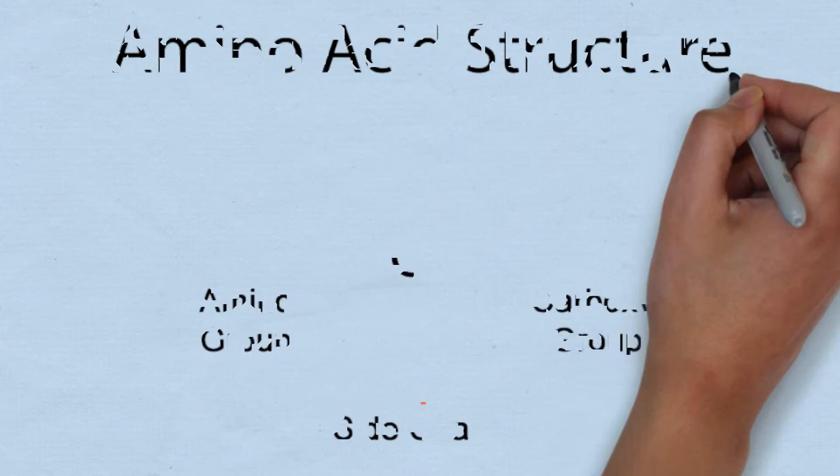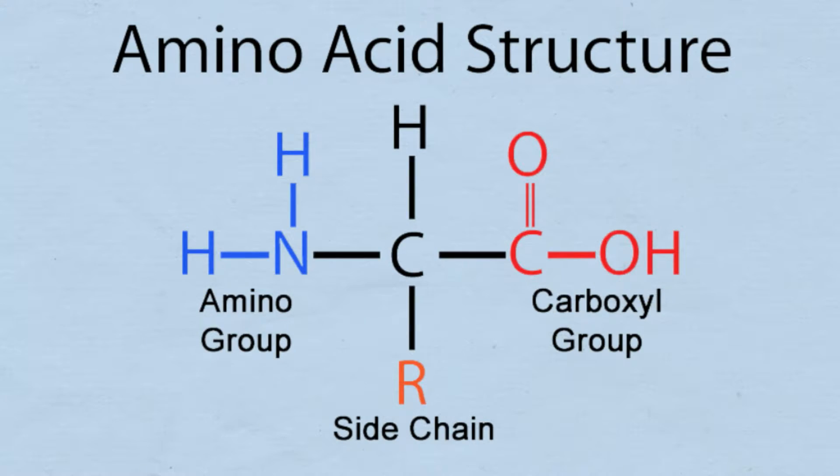Proteins are made of amino acids. Amino acids are the monomers that make up proteins. This picture here shows the structure of an amino acid.